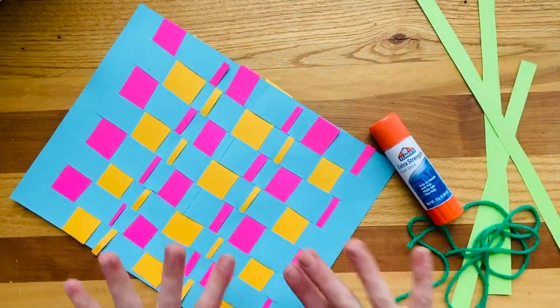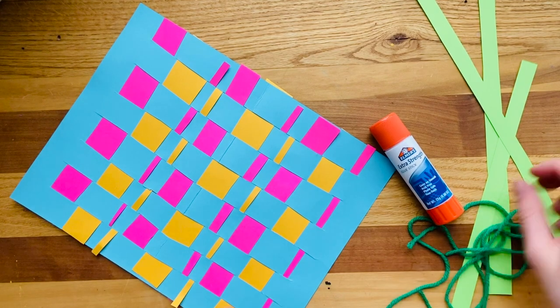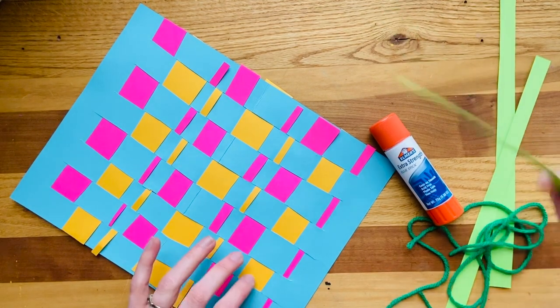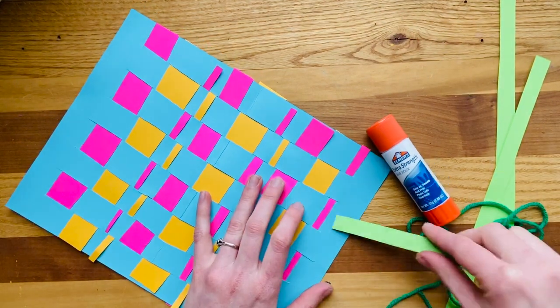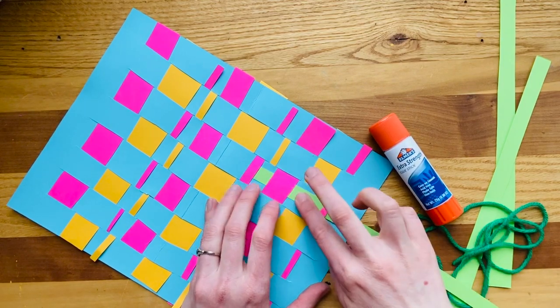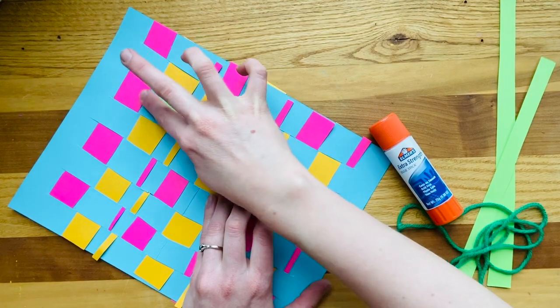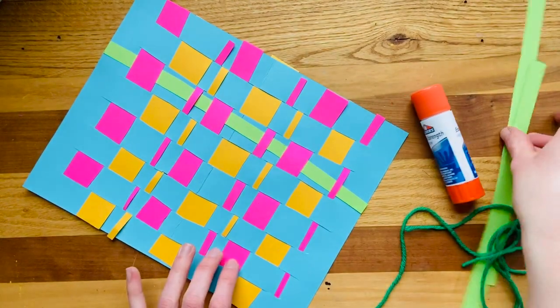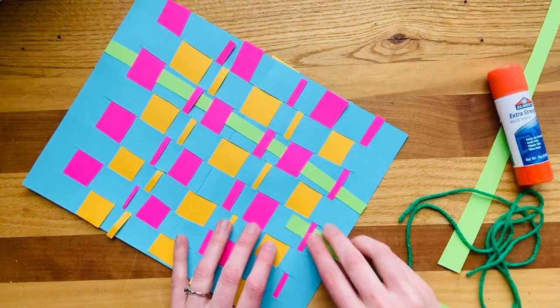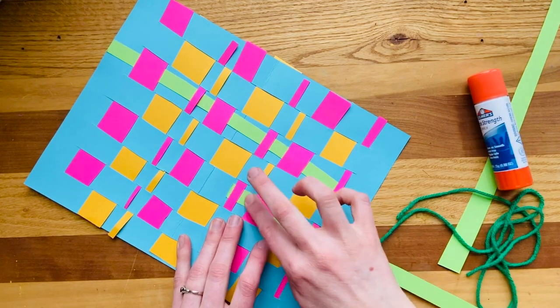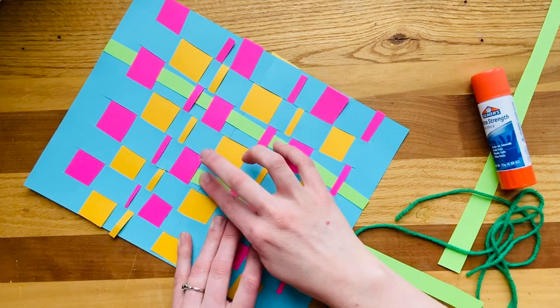Once you have everything woven, then you can decide if you want to add any extra embellishments. So long sheets of paper can actually be woven underneath some of the other ones and just slide right up the top till you have a more complex weaving. You can also weave in things like yarn or shoelaces or any other materials that you could find to make your weaving a little bit more interesting.